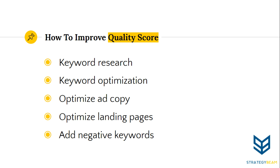3. Optimize ad copy. A-B test your ad copy based on different messaging and centered around the keywords that you use in each ad group. This will provide a cohesive experience for visitors from search, ad copy, and conversion.